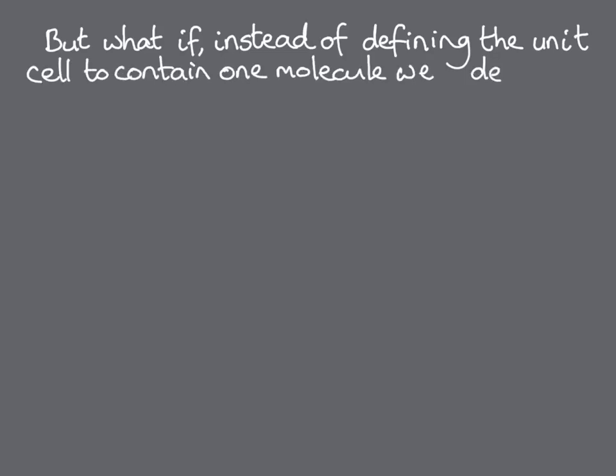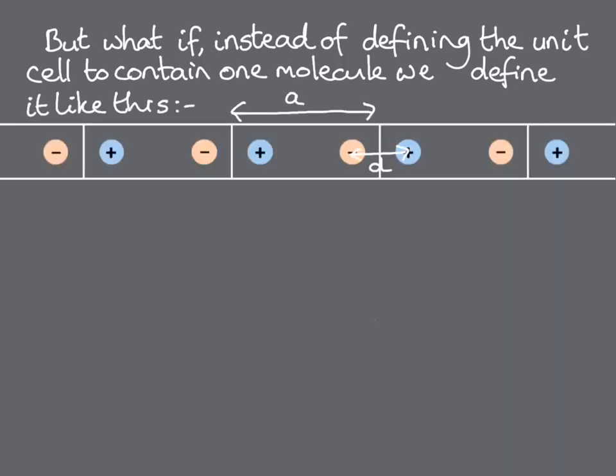But what if, instead of defining the unit cell so that each unit cell contains one of our original molecules, instead we define it like this. This is a completely valid choice because it can be periodically repeated to build up the whole chain, and we've changed nothing about the physical system.